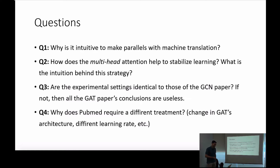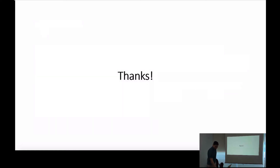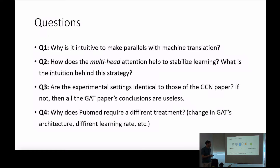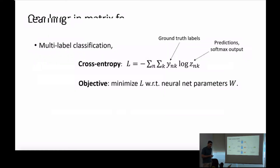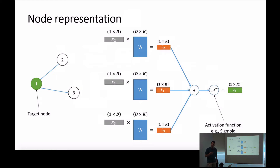Regarding the number of convolutional layers, the paper uses two layers in their main experiment and provides an additional experiment with up to ten layers.